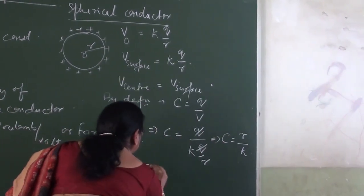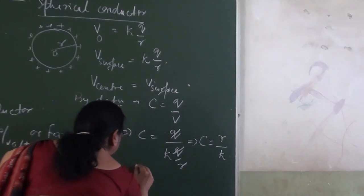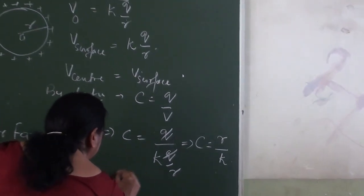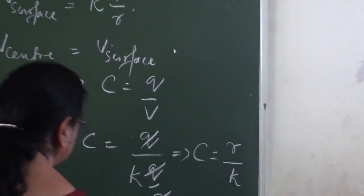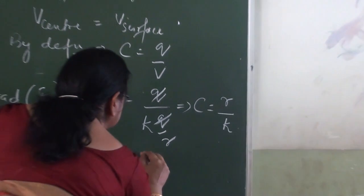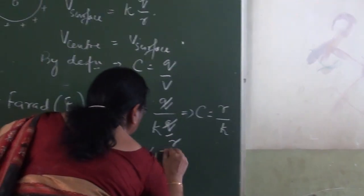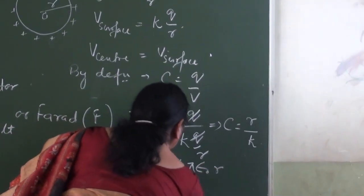If I substitute the value of K in SI units, then we can write C is equal to 4π epsilon-naught times R.